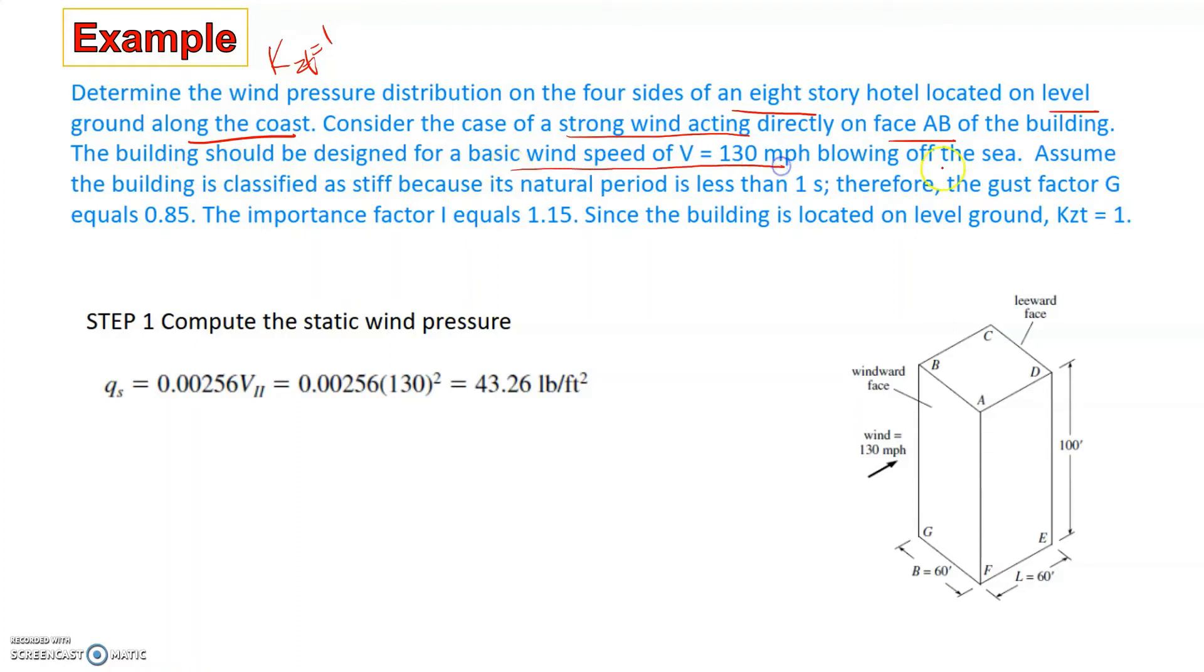Consider strong wind acting on face AB, and the building should be designed for basic wind speed of 130 mph. Assume the building is classified as stiff because its natural period is less than one, therefore the gust factor G is 0.85. The importance factor I equals 1.15, and the building is located on level ground. The first step involves the calculation of the static wind pressure, which is Qs equals 0.00256 V squared.